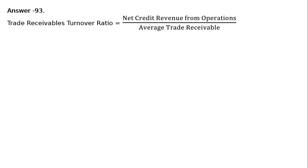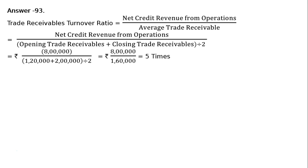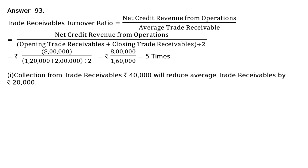Trade receivables turnover ratio is equal to net credit revenue from operations upon average trade receivables. That is equal to net credit revenue from operations divided by opening trade receivables plus closing trade receivables, whole divided by 2. That is equal to Rs 8 lakhs upon (Rs 1 lakh 20,000 plus Rs 2 lakhs) divided by 2, equal to Rs 8 lakhs upon Rs 1 lakh 60,000, which equals 5 times.